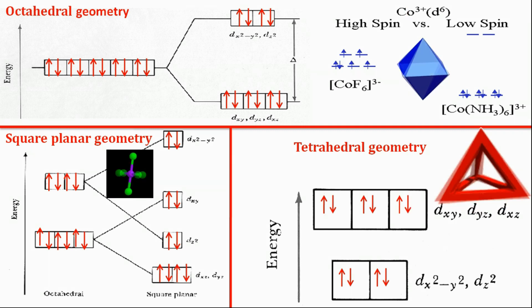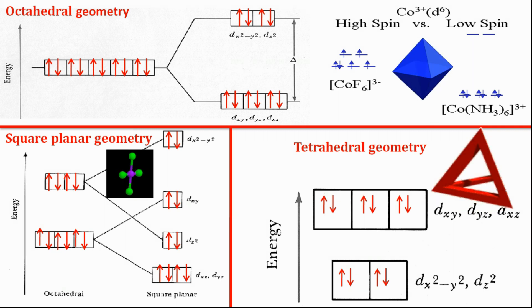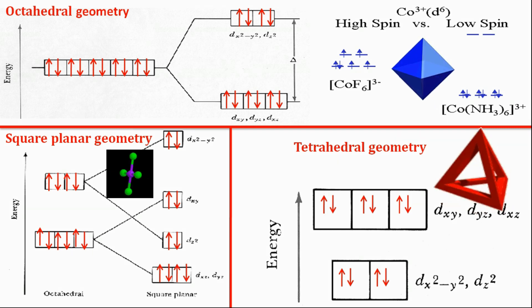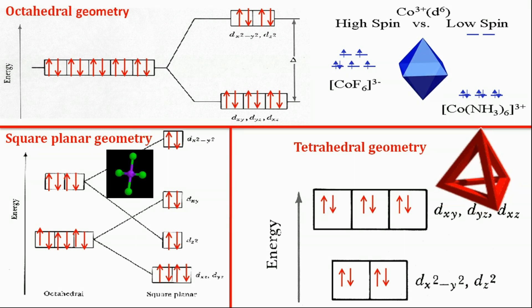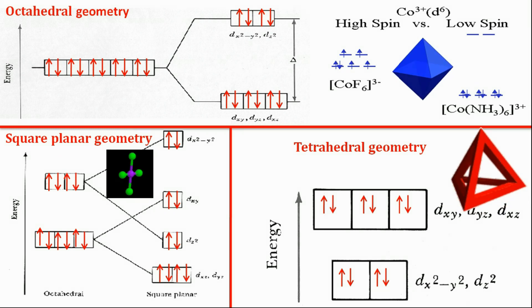The difference in splitting energy is tetrahedral splitting which is less than delta naught. Delta naught is octahedral complexes. Delta naught is the change in energy in octahedral complexes and delta t is the change in energy level in tetrahedral geometry. Here the energy will be less than the octahedral complexes. Typically smaller than spin pairing energy. So the tetrahedral complexes usually possess high spin.